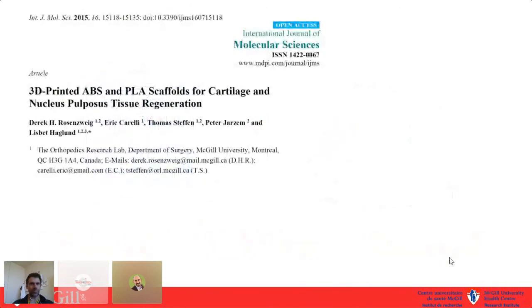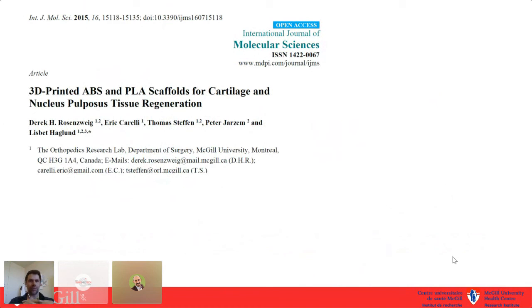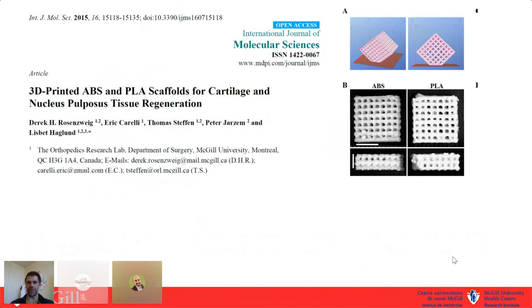What really got me into 3D printing was a study published in 2015 that we started working on in late 2013. We had a desktop 3D printer and asked: can we use this thermoplastic printer for simplistic tissue engineering applications? It turned out we could demonstrate that ABS plastic — not a biocompatible petroleum-based plastic — and PLA plastics could be used to build little scaffolds to model cartilage and nucleus pulposus, a type of spinal disc tissue, for tissue repair applications and drug screening.